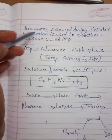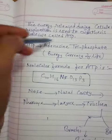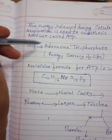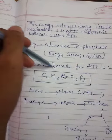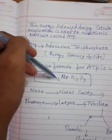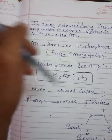After that, definition for ATP: the energy released during cellular respiration is used to synthesize a molecule called ATP. ATP is adenosine triphosphate, the energy currency of life. Molecular formula for ATP is C10H16N5O13P3.